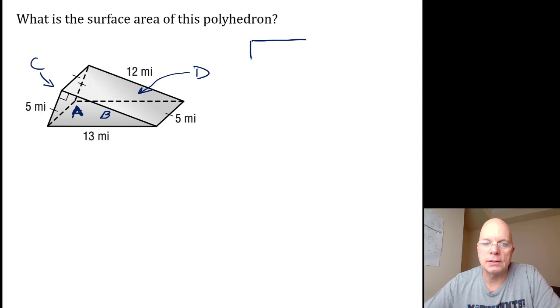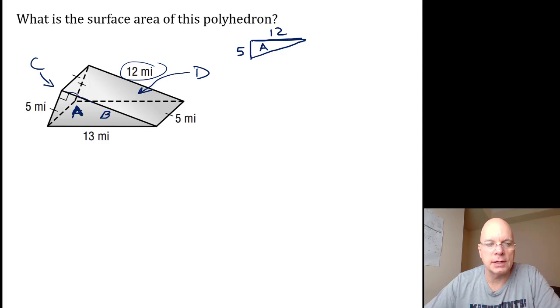Area A is a right triangle with a base of—I didn't see it right away because I'm looking here and I don't see it, but I see it over here—12, and a height of 5. That's right here.